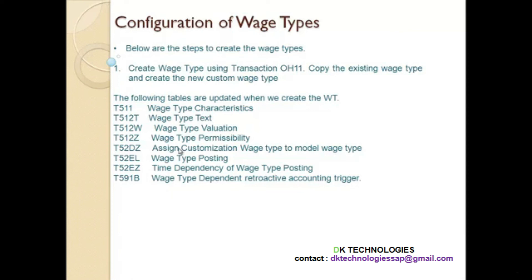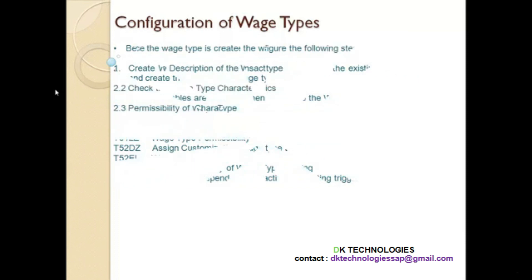Because you are making a copy of the model wage type, everything in the original wage type will get copied to your wage type. Then you can go into each table if you want to change the characteristics for your custom wage type — SAP has permitted that. But SAP has not permitted you to change the model wage type characteristics. That is the reason SAP provides the option to copy the model wage type and create your custom wage type. When you create the custom wage type these tables get updated, and then you can go and change the characteristics of your wage type if needed.